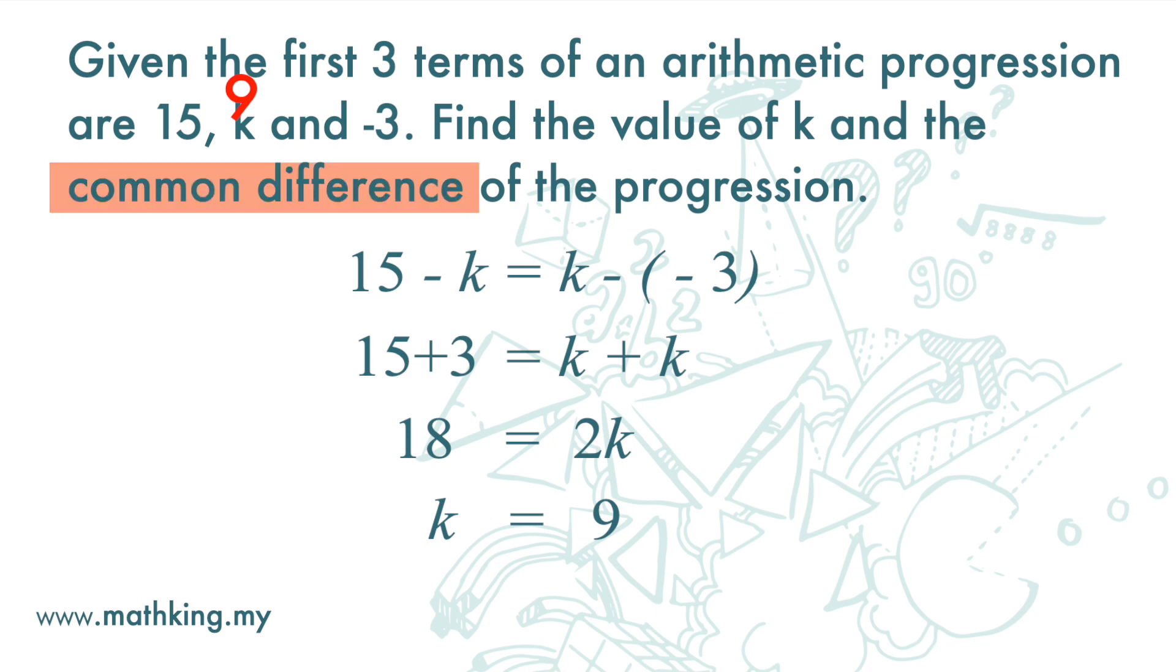To get the common difference, we subtract 9 from 15 or negative 3 from 9. So, the common difference is 6.